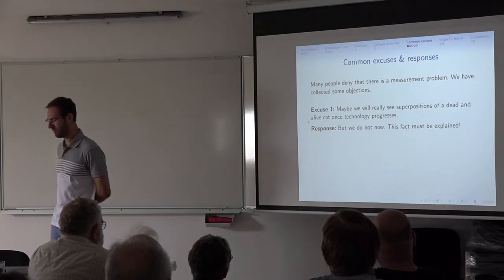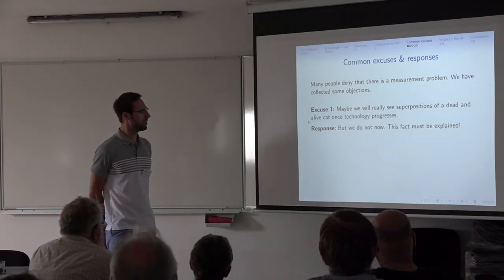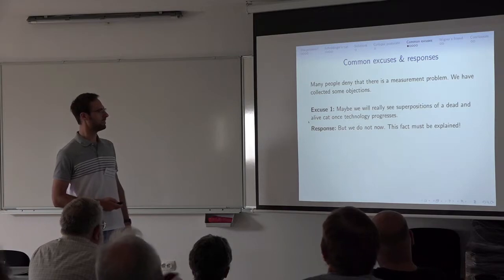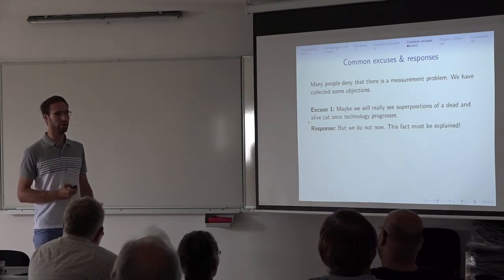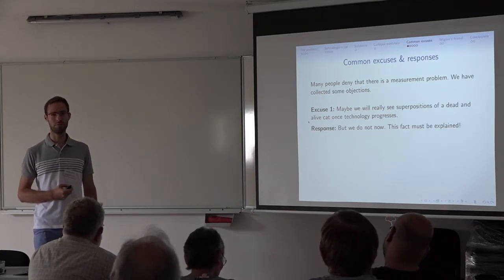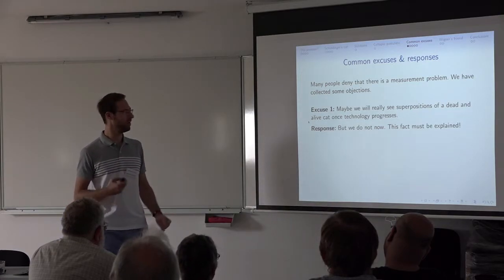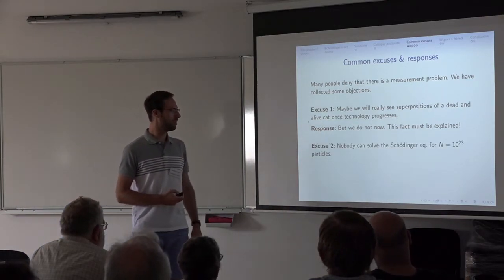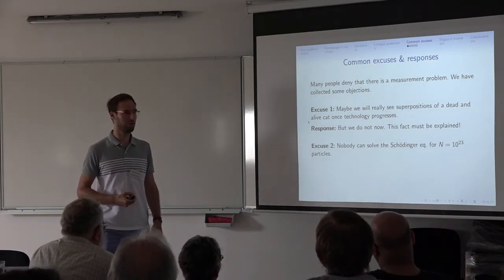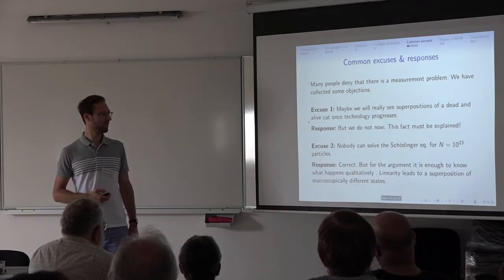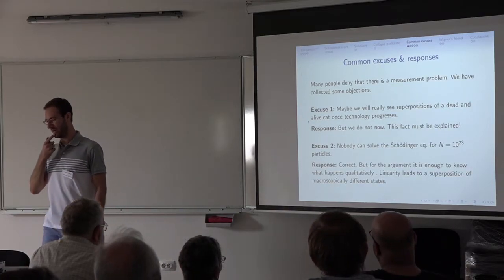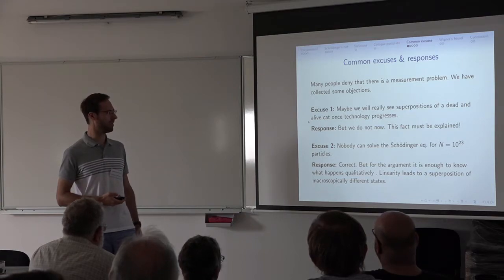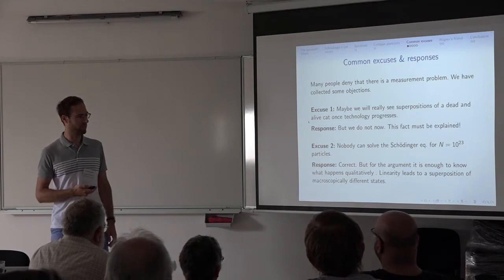Many people deny that there's a measurement problem. Objection one: maybe we really can observe superpositions of a dead and alive cat once the technology progresses. Response: we do not now, and at least this fact has to be explained. Objection two: nobody can in fact solve the Schrödinger equation for a realistic number — 10²³ — of particles. Response: that's correct, but for the argument it is not necessary to really solve the Schrödinger equation. It's enough to know what qualitatively happens. The linearity will definitely lead to a superposition of macroscopically different states.